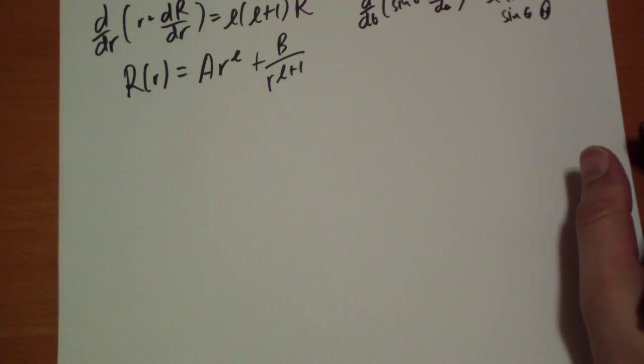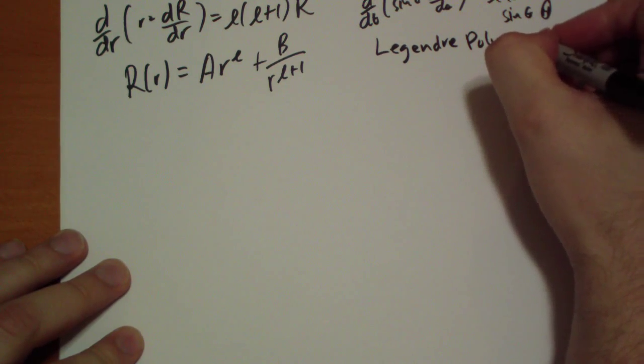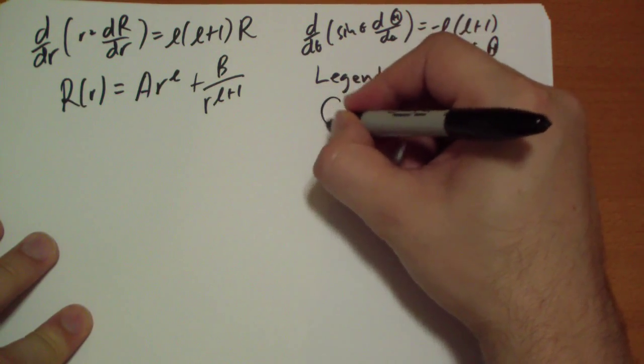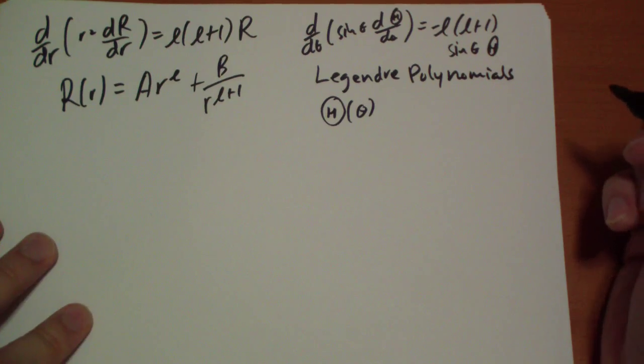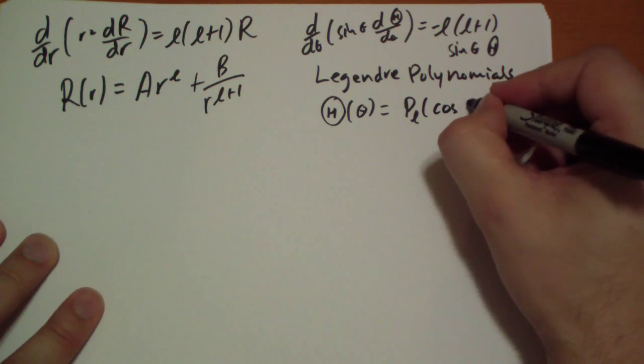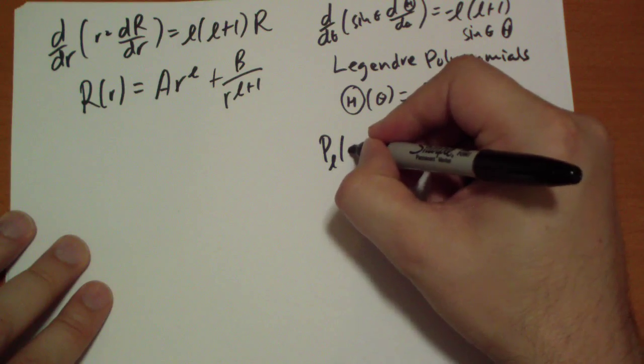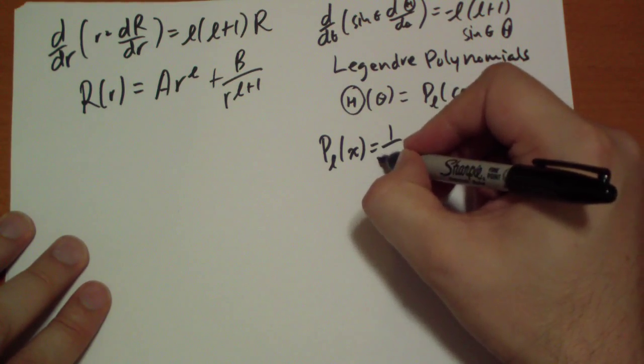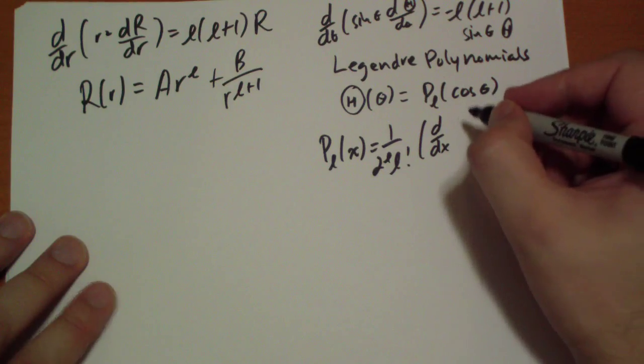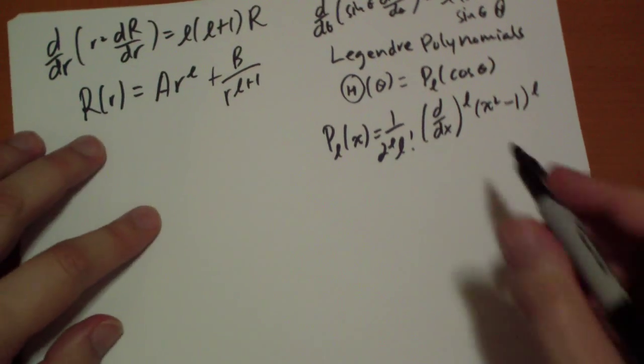And this has the solution of Legendre polynomials. Okay? Again, don't freak out. This is not that difficult. Besides, I don't think you're going to be asked to be doing too much with these. So, theta of theta equals P_l of cos theta. And P_l, this is the Rodriguez formula. So, P_l of x is equal to 1 over 2 to the l, l factorial times, you didn't think that was all, did you? d by dx, the l-th derivative of x squared minus 1 to the l. This is called the Rodriguez formula.